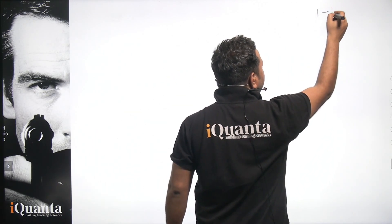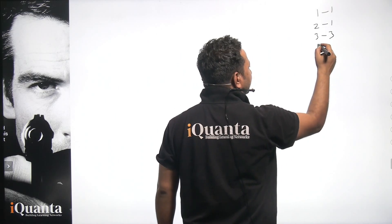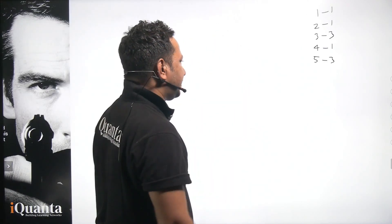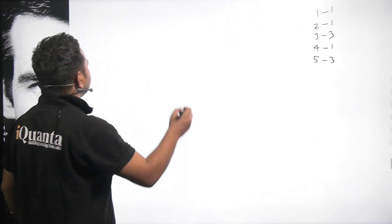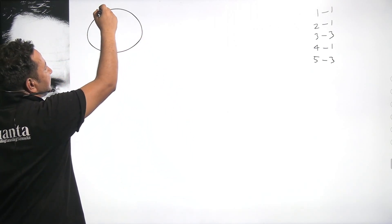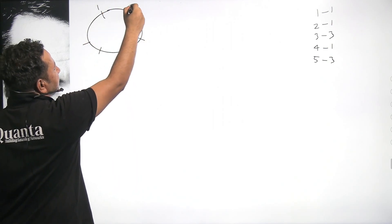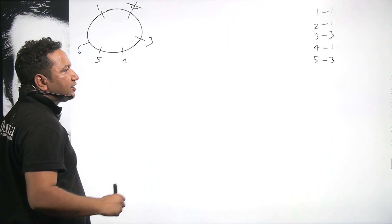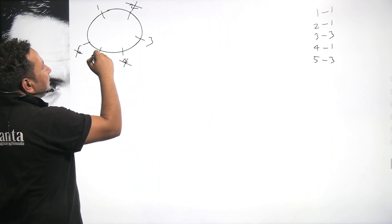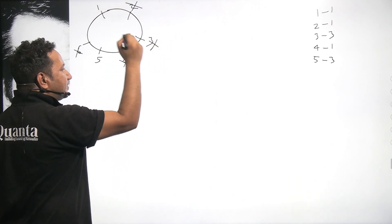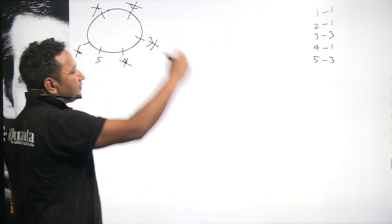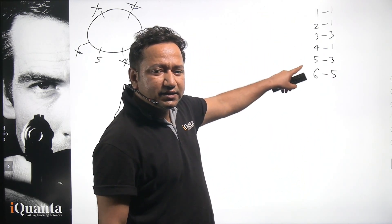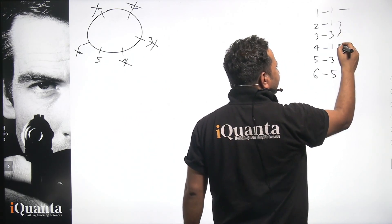So far: for N=1, R=1; for N=2, R=1; for N=3, R=3; for N=4, R=1; for N=5, R=3. Now let's do six people. Person one kills two, passes to three; four is killed, gun to five; six is killed, gun to one; one kills three, passes to five; five kills one and survives. So for N=6, R=5. A pattern is forming: 1, 1, 3, 1, 3, 5 — the odd numbers.